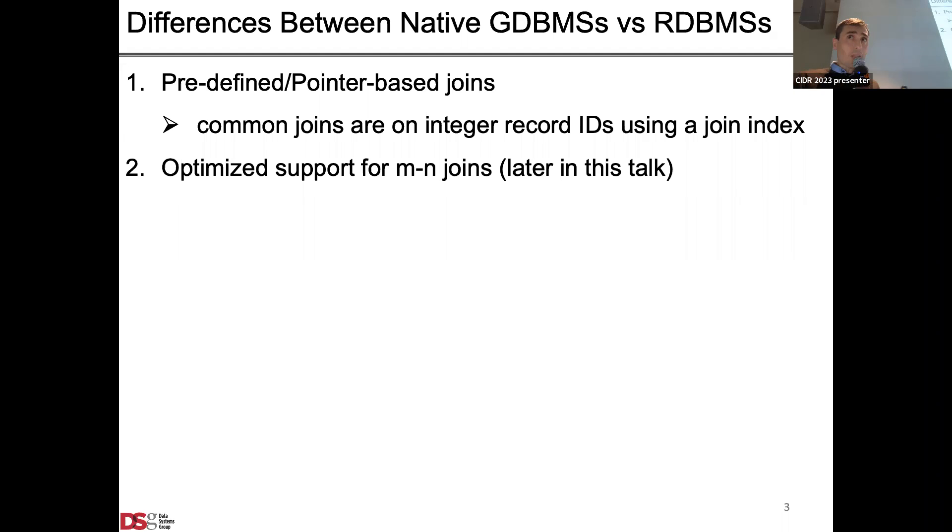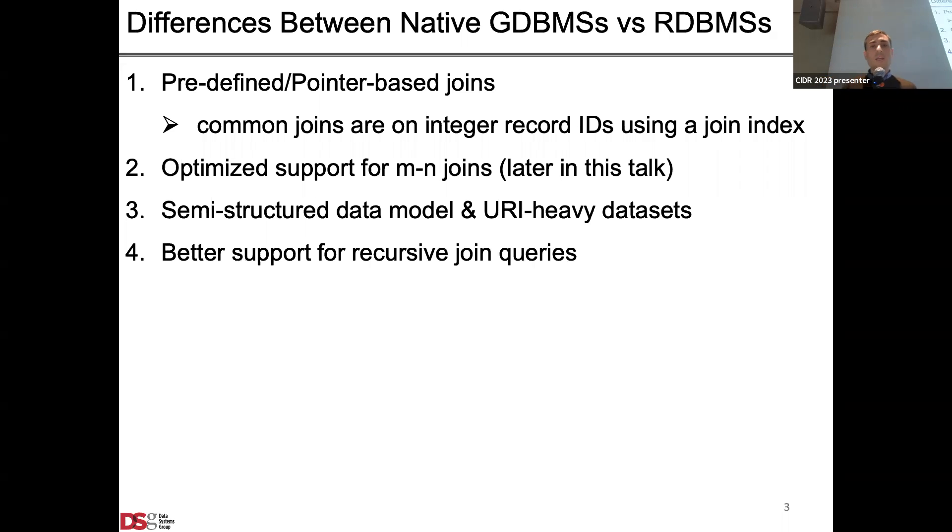Second, a lot of the application data stored on these systems contain node records that have many-to-many relationships with other node records, and a lot of applications find complex patterns on these nodes, so these correspond to complex many-to-many joins. These systems should be optimized for many-to-many joins. They implement semi-structured data models so not every piece of data needs to be predefined in the schema. Especially for knowledge graph management they manage URI-heavy datasets, so they should be competent on these types of datasets.